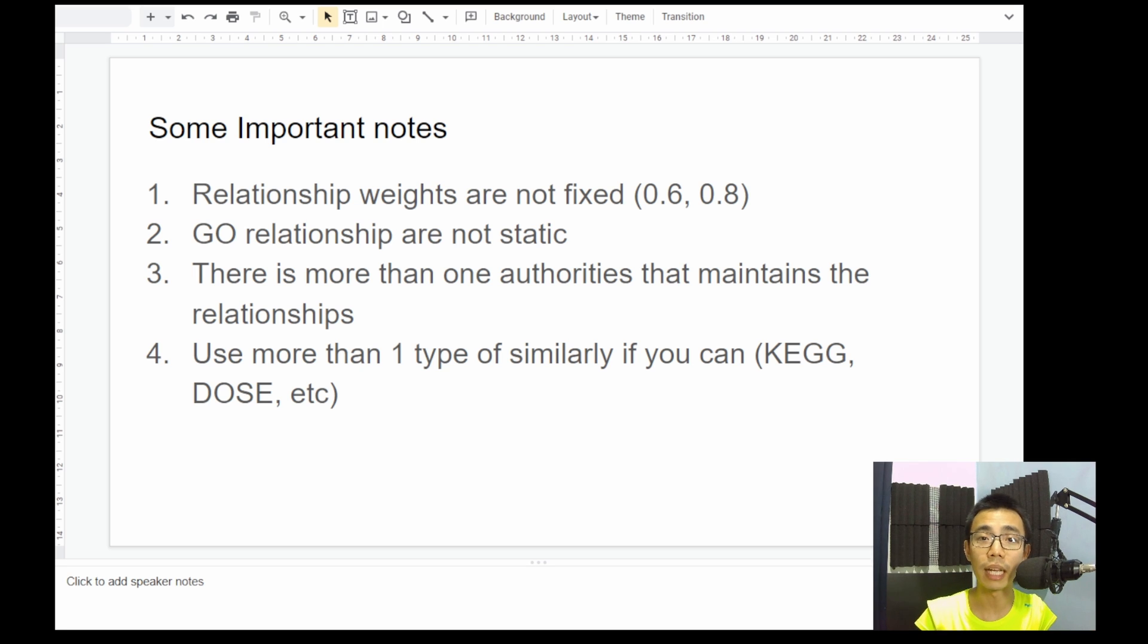The DAG graph that you see can change all the time, and there are actually more than one authorities that maintain the relationships. So make sure you understand who you are downloading from, and you are citing them properly, so the result is slightly a bit more reproducible, and someone can understand what you're trying to do.